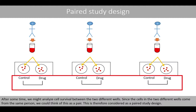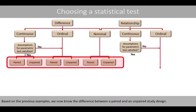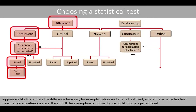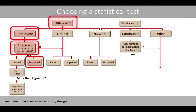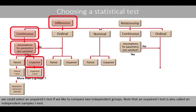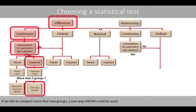Based on our previous examples, we now know the difference between a paired and an unpaired study design. Suppose we'd like to compare the difference before and after a treatment where the variable is on a continuous scale. If we fulfill the assumption of normality, we could choose a paired t-test. If we have more than two measurements on the same individual — for example, before treatment and after two and four weeks — we could use a repeated measures ANOVA. If we have an unpaired design, we could select an unpaired t-test to compare two independent groups, also called an independent samples t-test. If we'd like to compare more than two groups, a one-way ANOVA could be used.